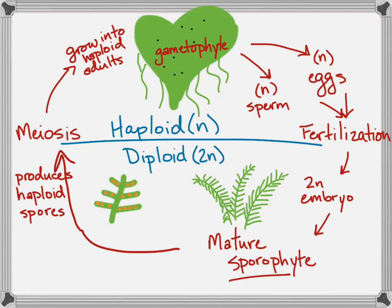You have this diploid generation followed by a haploid generation. In the evolution of the plant kingdom, plants started out as mostly haplontic, and then they went into this alternation of generations. Now we see flowering plants where basically the gametophyte is contained within the plant, so the plant is essentially diplontic — all we see in the world are the diploid generations, and there's no mature gametophyte adult. So that's a little bit of botany and a little bit on the cell cycle — that's alternation of generations.